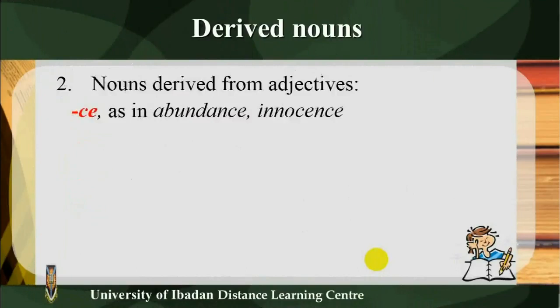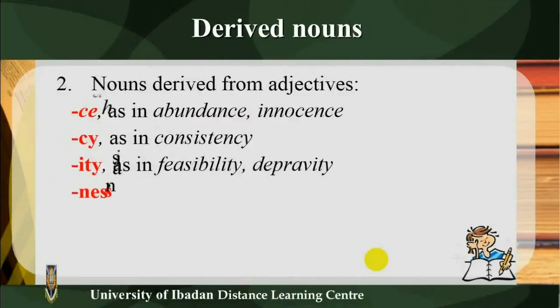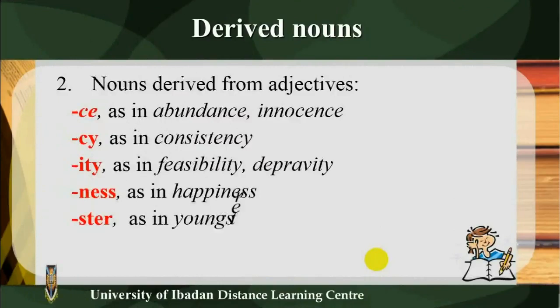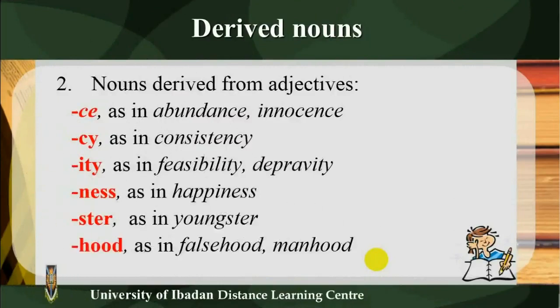2) Nouns derived from adjectives. Suffixes include: -ance/-ence (as in 'abundance', 'innocence'), -cy (as in 'consistency'), -ity (as in 'feasibility', 'depravity'), -ness (as in 'happiness'), -ster (as in 'youngster'), -hood (as in 'falsehood', 'manhood').